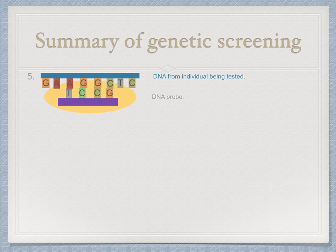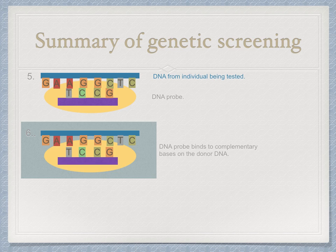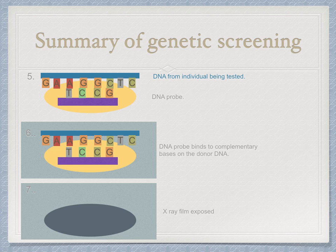The probe is then added to a single-strand DNA fragment from the individual being tested. If the donor has the mutated gene, some of the donor's fragments will have a nucleotide sequence that's complementary to the probe, so the probe is going to bind to these complementary bases. If the complementary fragments are present, the DNA probe will be taken up and bind to that donor DNA. When you put this over x-ray, the x-ray film will be exposed, as you can see in this diagram here. If no complementary fragments are present, the probe will not be taken up, and the x-ray film will be left unexposed.